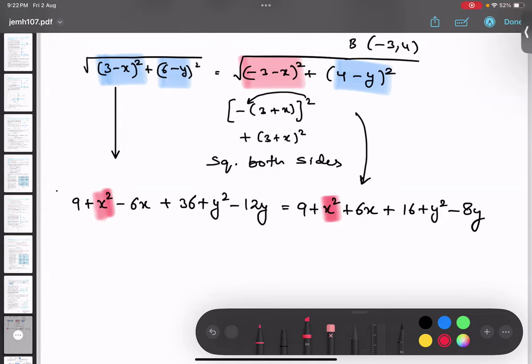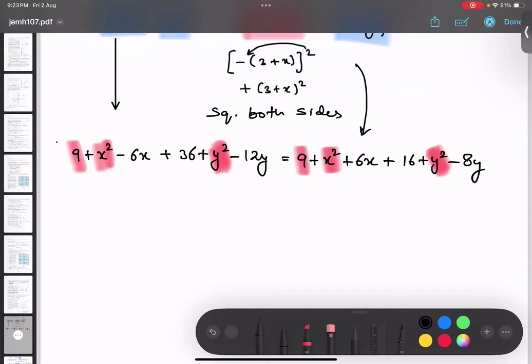Anything else cancel? 9, 9 is same? Cancel. What about minus 6x, 6x? No. Signs are different. Signs are different. Very good. y square, y square cancel. Anything else getting cancel? Nothing. So let me just write down what is remaining first of all so that we are not confused.